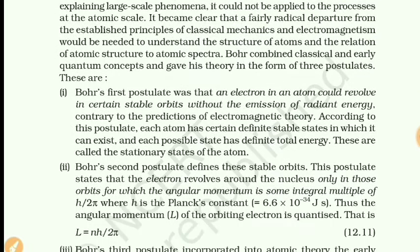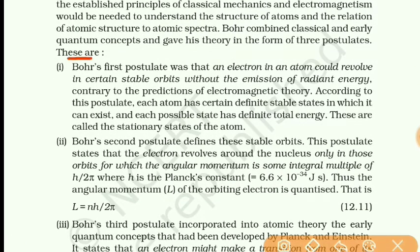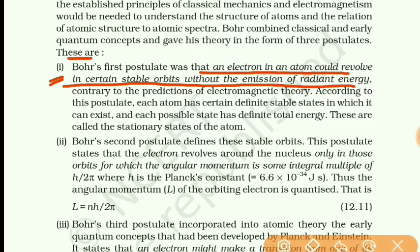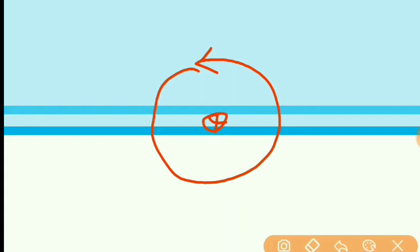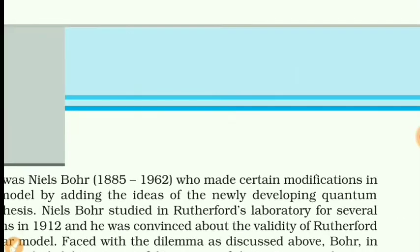Bohr's first postulate says that an electron in an atom could revolve in certain stable orbits without the emission of radiant energy. So an electron in an atom can revolve in such an orbit where there is no emission of electromagnetic radiations — that orbit is considered a stable orbit. The electron can revolve in a stable orbit without emission of any radiation.